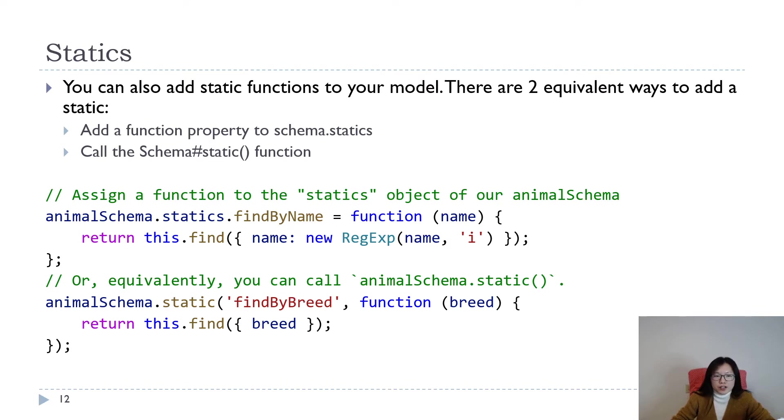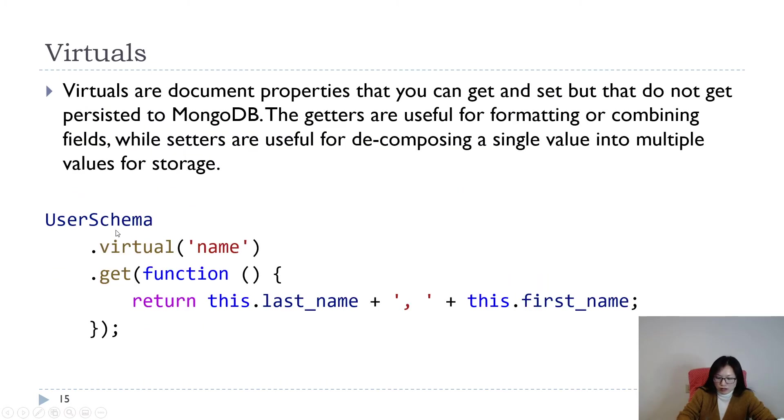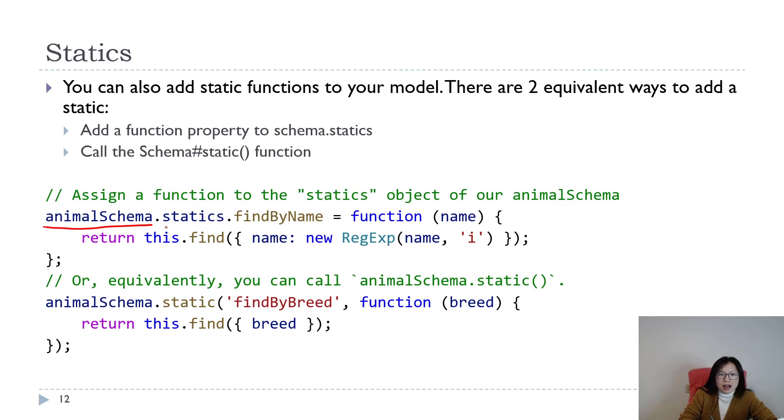As you can see in the slides, for the statics, you can also add static functions to your model. There are two ways to do that. The first way is using schema.statics, then you give the name. How to call that in your controller? In your controller you already require and get the model.